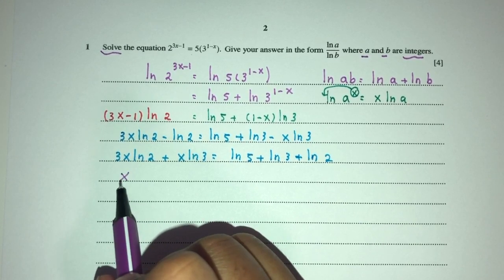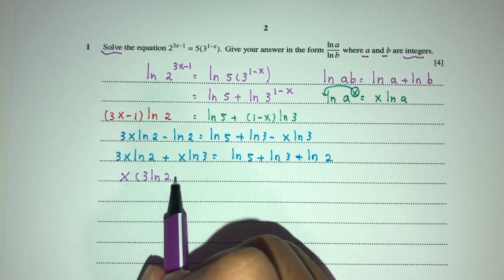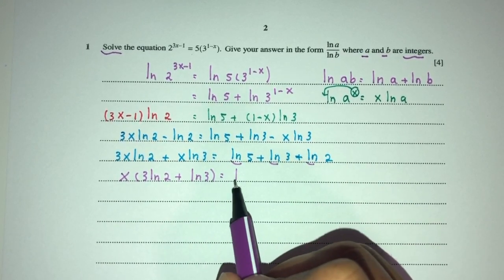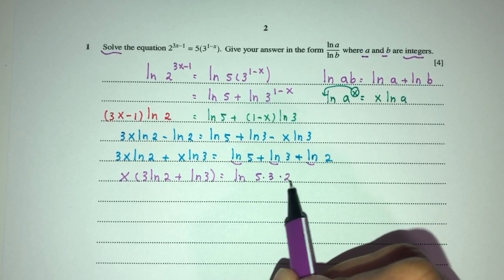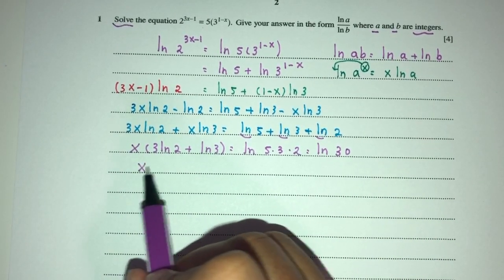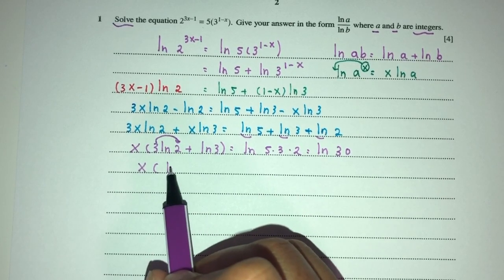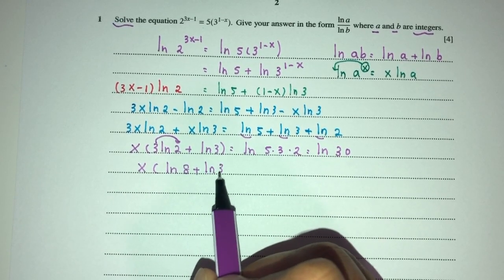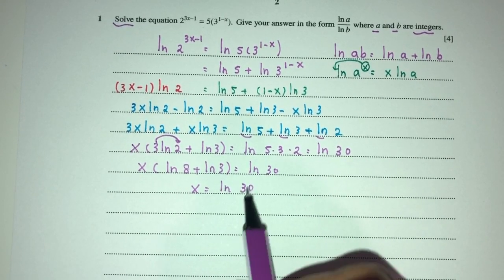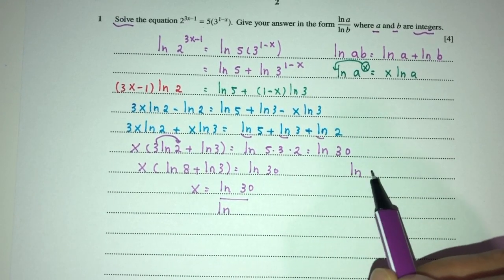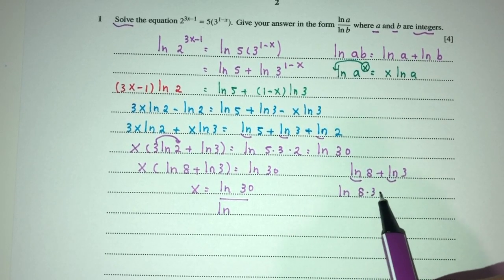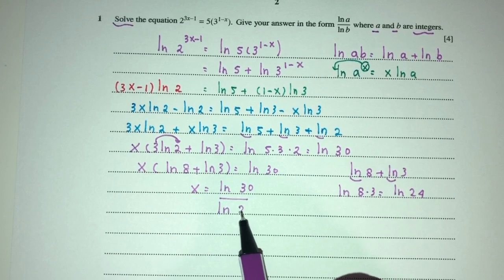Combine them and factorize. You will have x(3 ln 2 plus ln 3) equals — now combine these: ln 5 times 3 times 2 — that will be ln of 30. Now here we can send this denominator on top. You will have ln 8 plus ln 3, which equals ln 30. So finally, x will simply be ln 30 divided by ln of 24, since ln 8 plus ln 3 equals ln 24. So 24 is your answer.